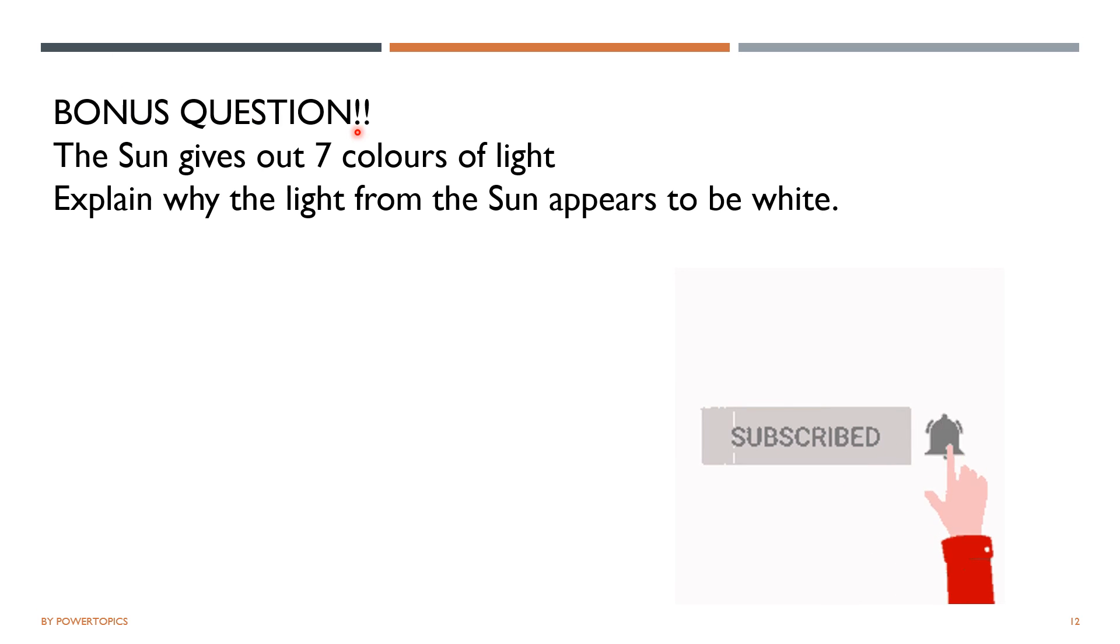Here's a bonus question you can answer. The sun gives out seven colors of light. Explain why the light from the sun appears to be white. You can comment down the answers below and the right answer would be pinned. Also, please don't forget to subscribe this channel if you learned something new today. And watch more of our videos here. Thank you.